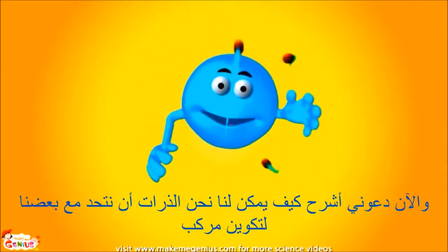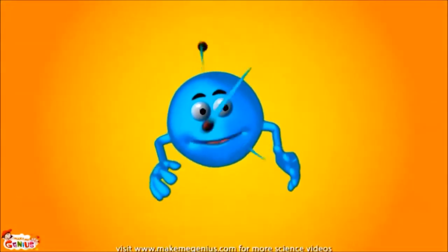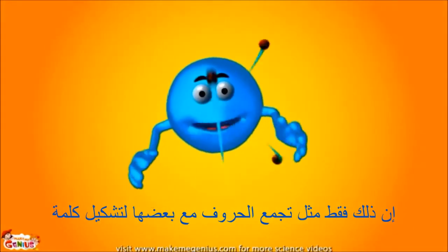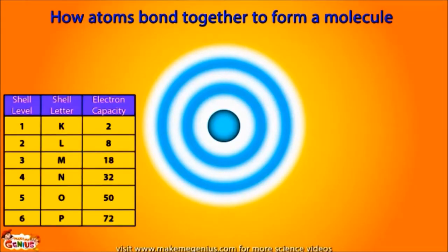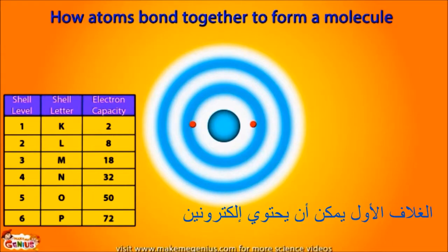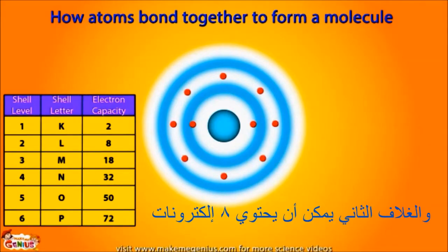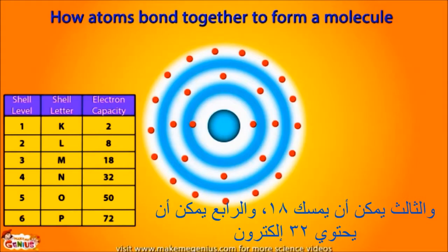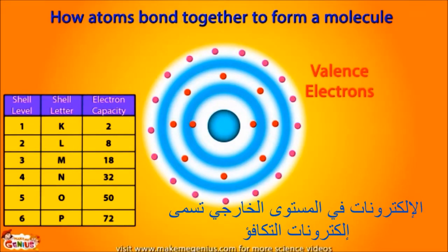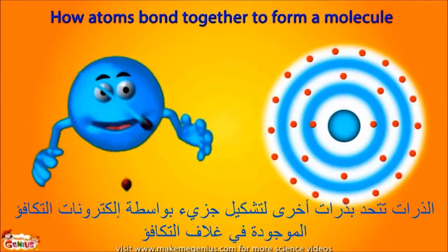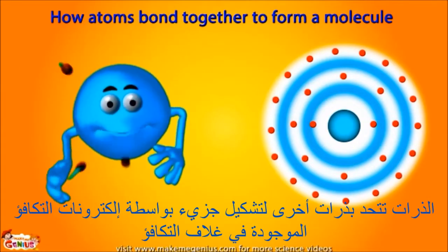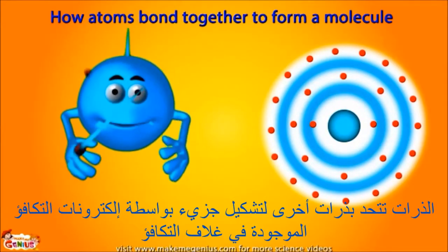Now let me explain how atoms bond together to form a molecule. It's just like letters getting together to form a word. Electrons keep moving in shells outside the nucleus. Each shell contains a fixed number of electrons. The first shell can have two electrons, and the second can have eight electrons. The third can hold 18, and the fourth can hold up to 32 electrons. The atoms in the outermost shell of an atom are called valence electrons, and the outermost shell is called the valence shell.